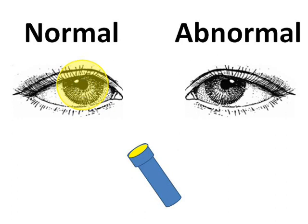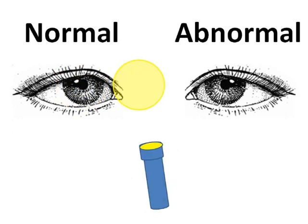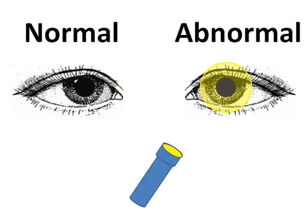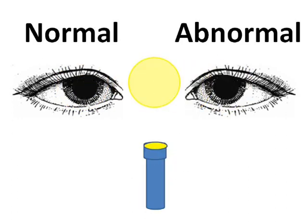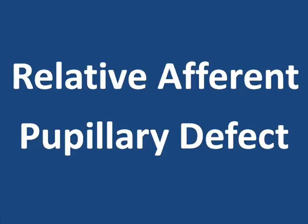Just to be clear, this particular condition has nothing to do with one pupil being larger than the other. It has to do with both pupils failing to remain contracted when the light is quickly swung from the normal to the abnormal eye.